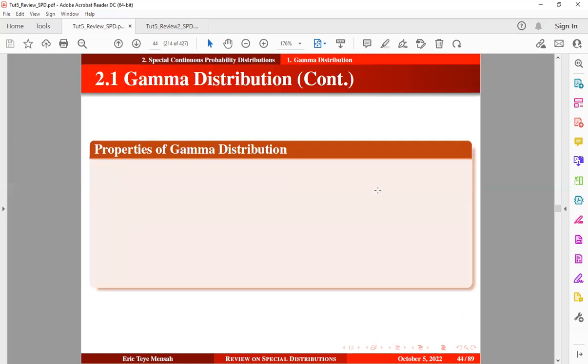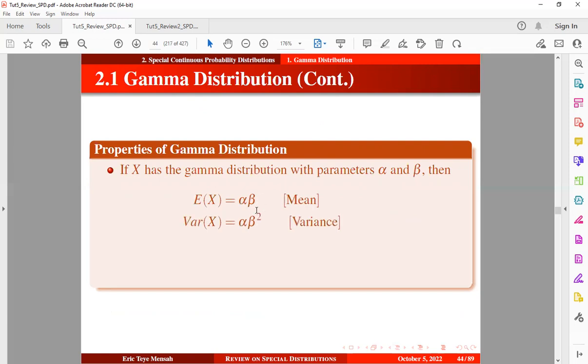So let's take a look at some properties of the gamma distribution. If X has the gamma distribution with parameters alpha and beta, then the expectation of the random variable X is equal to alpha beta, and the variance of X is alpha beta squared, and we have the moment-generating function as defined below.